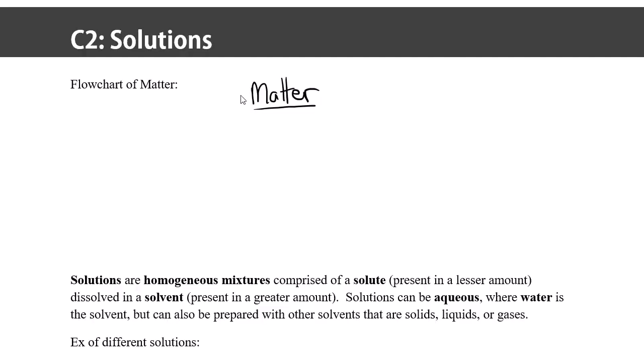So we can start to understand where solutions fit if we draw a flowchart to represent different types of matter. So depending on whether or not we can physically separate a substance from other substances, a sample of matter can be classified as either a pure substance or a mixture. So a mixture is made up of more than one part, and at the fundamental smallest level, a pure substance has particles that all look the same.